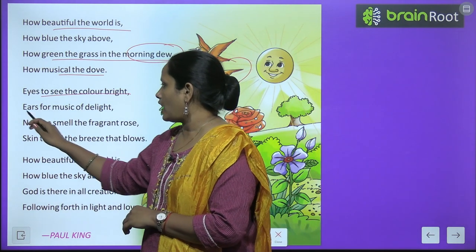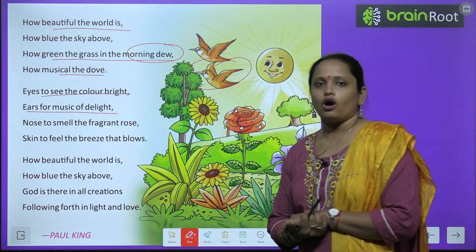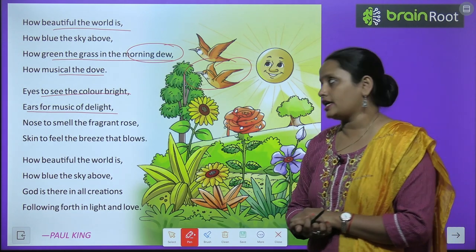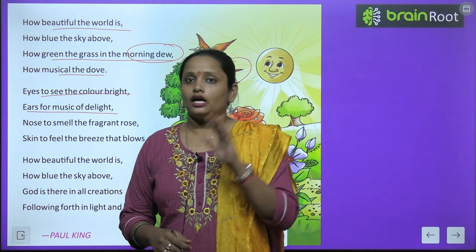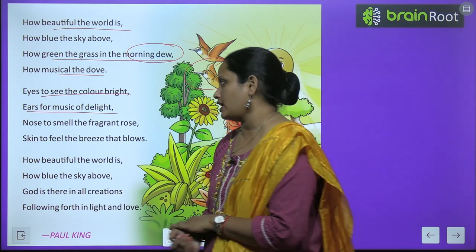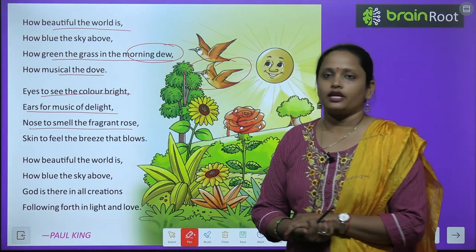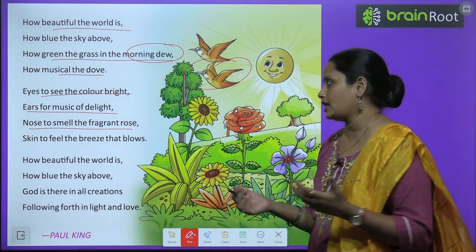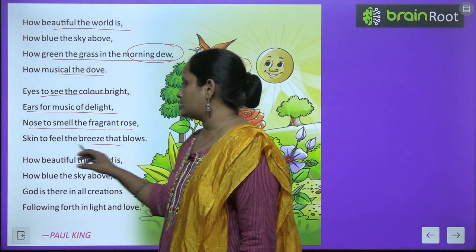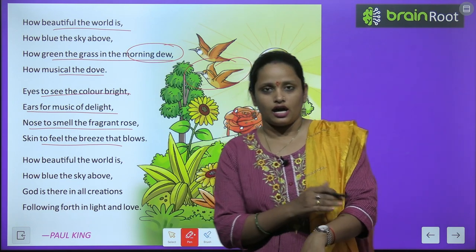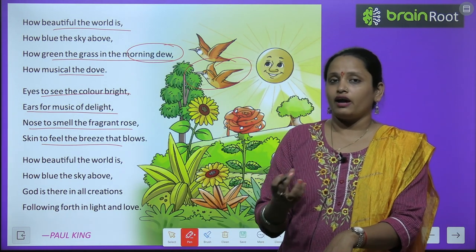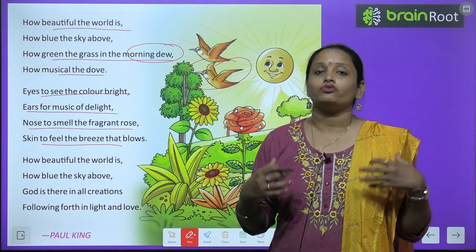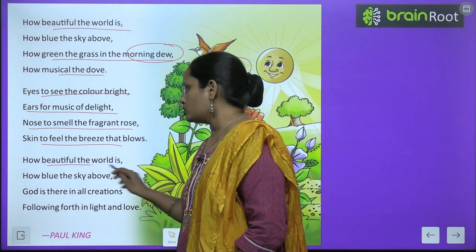Eyes to see the colour bright. Ears to hear the music of delight. We have eyes to see the colours. Nose to smell the fragrant rose — we can smell the smell. Skin to feel the breeze that blows, and from our hands we can feel how beautiful the world is.